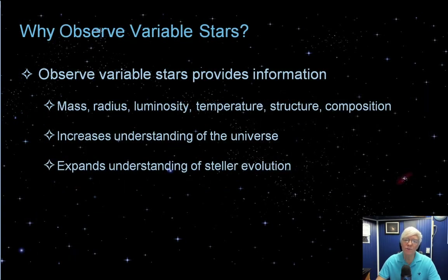Astronomers observe and study variable stars to get data about various properties such as mass, radius, and characteristics. We use that data to increase our understanding of the universe in general and stellar evolution in particular.